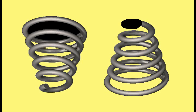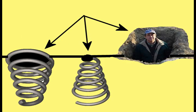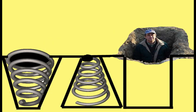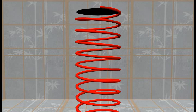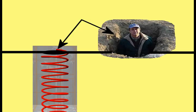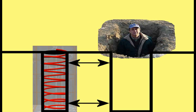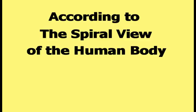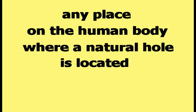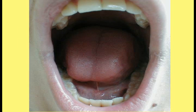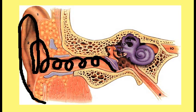If the ends of a changing diameter three-dimensional spiral are colored black, they look like the mouth of a hole, with the rest of the spiral resembling the actual hole. The same is true for a uniform diameter spiral. According to the spiral view of the human body, any place on the body where a natural hole is located — such as the nostrils, the ears, or the mouth — is a place that is influenced by a spiral.